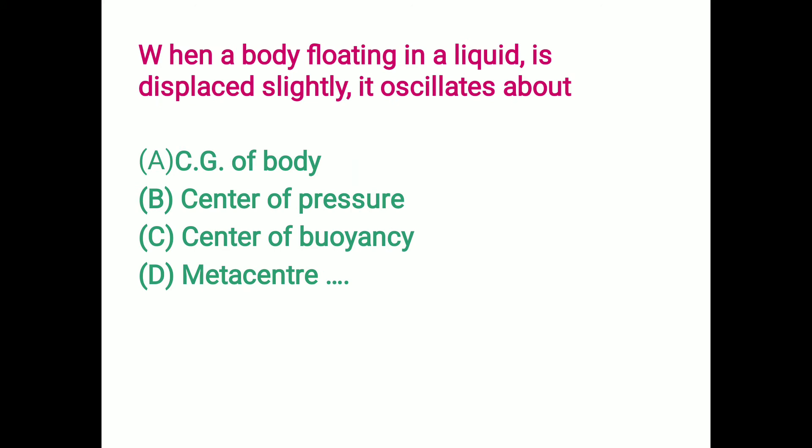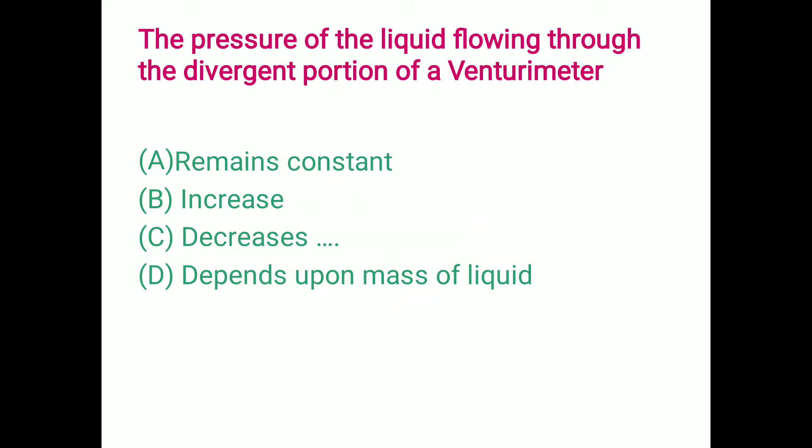When a body is floating in a liquid and is displaced slightly, it oscillates about: center of gravity, center of pressure, center of buoyancy, or metacenter. The correct answer is option D — the body oscillates about the metacenter.